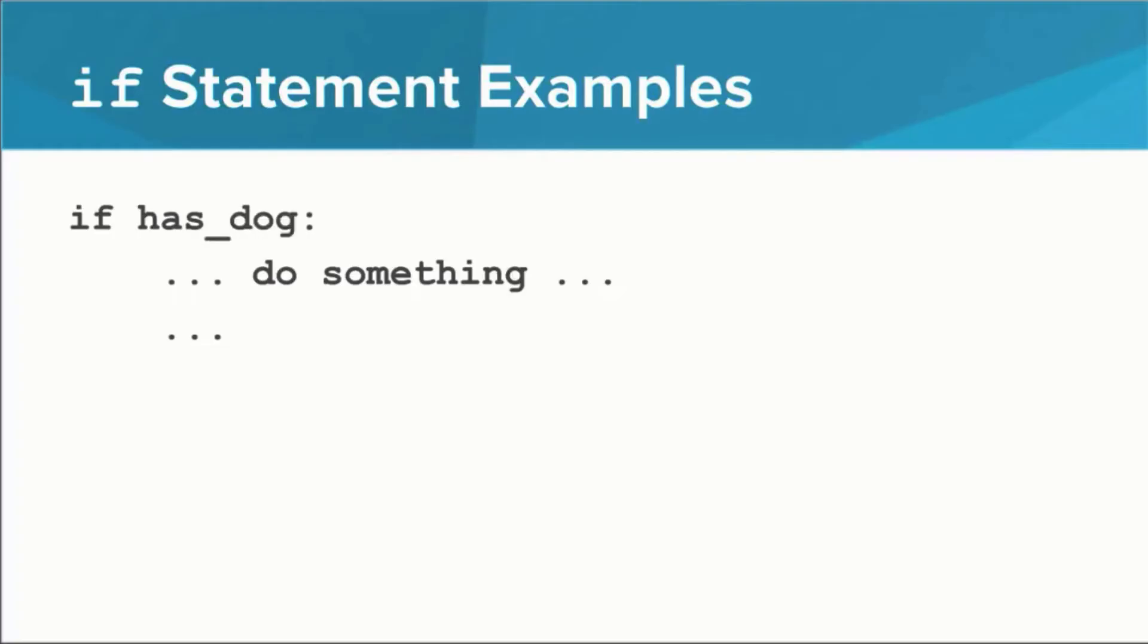The condition can also be a variable. In this case, the body of the if statement might run, depending on the value of hasDog. If hasDog is true, the body will run. If hasDog is false, nothing happens.